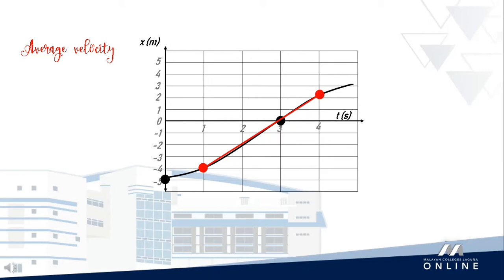Here, we plot two points: one at -4 meters position at 1 second, and the other one at 2 meters at 4 seconds. Again, to find the average velocity, we need to find the slope.